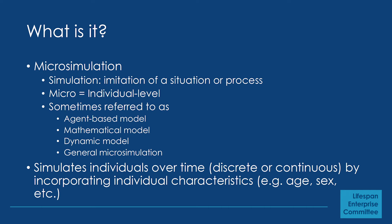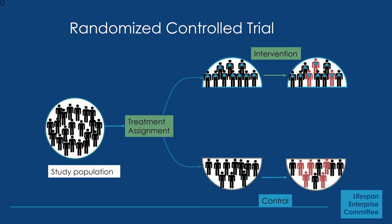In microsimulation, what we want to do is simulate individuals over time and incorporate individual characteristics like age and sex. Going back to the idea of a randomized control trial, we start with a study population, flip a coin, assign people to the treated and untreated group, follow them over a period of time, and then compare and contrast their outcomes.